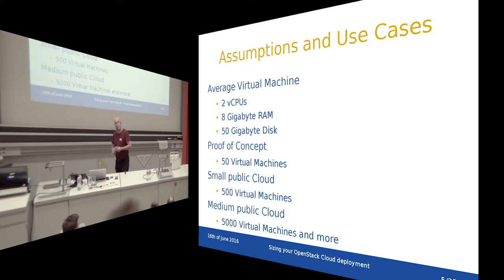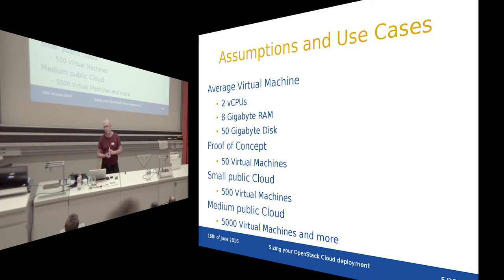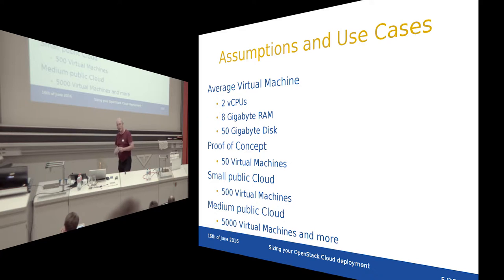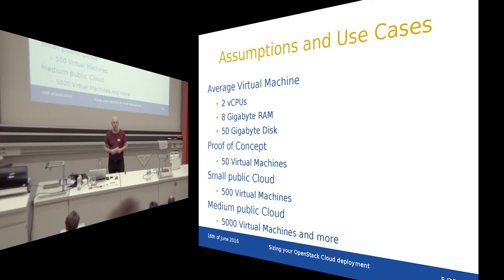The average virtual machine today on our own platform is about 1.5 CPUs, 4 GB of RAM, and around 30 GB of disk. We expect VMs will grow larger in the near future, so in this calculation we'll use two CPUs, 8 GB of RAM, and 50 GB of storage for our average VM.